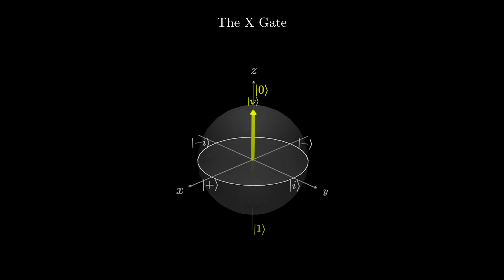The most common single qubit gates are the X, Y, and Z gates. Let's first look at the X gate. If we have a qubit in the 0 state and apply the X gate to it, it flips to the 1 state.